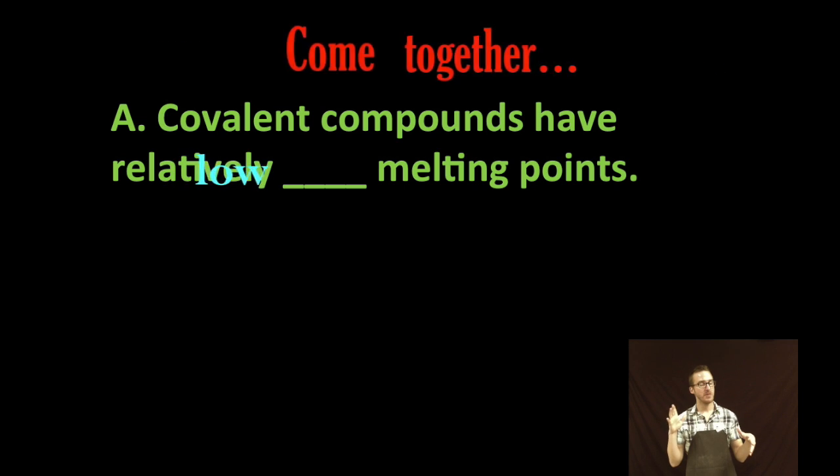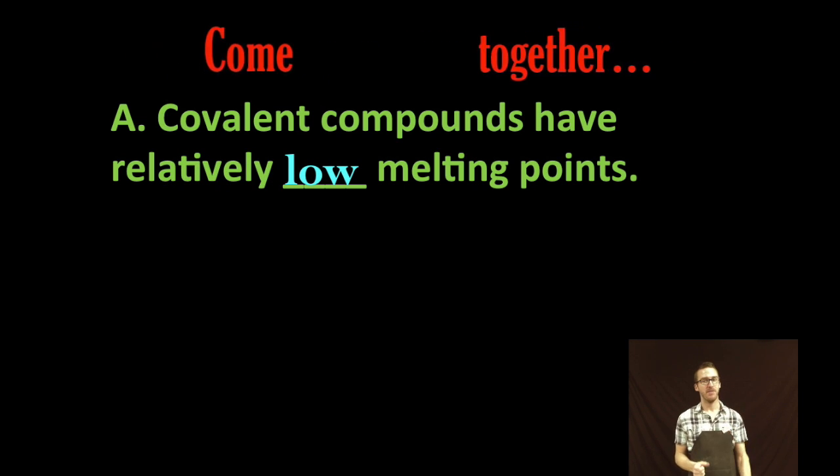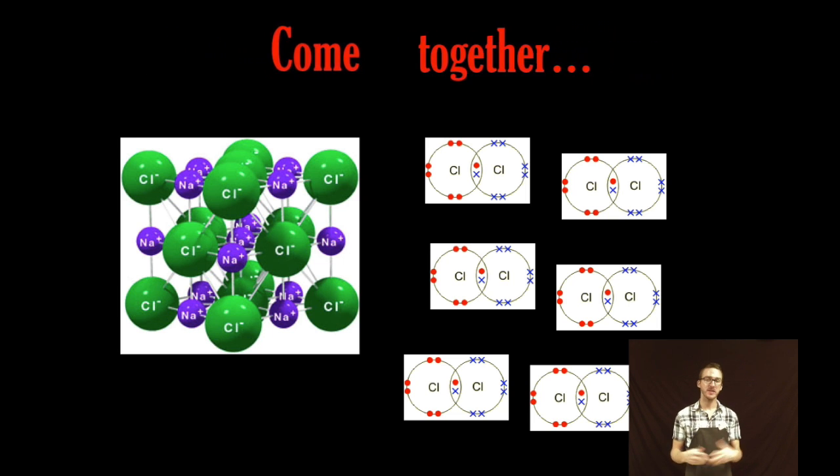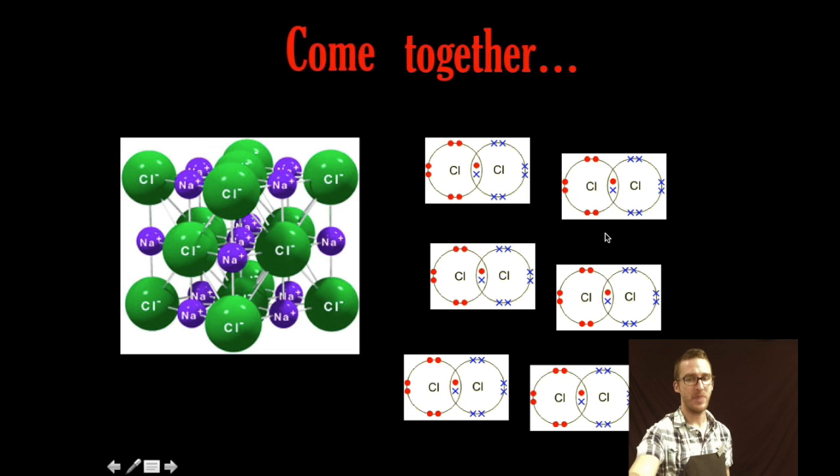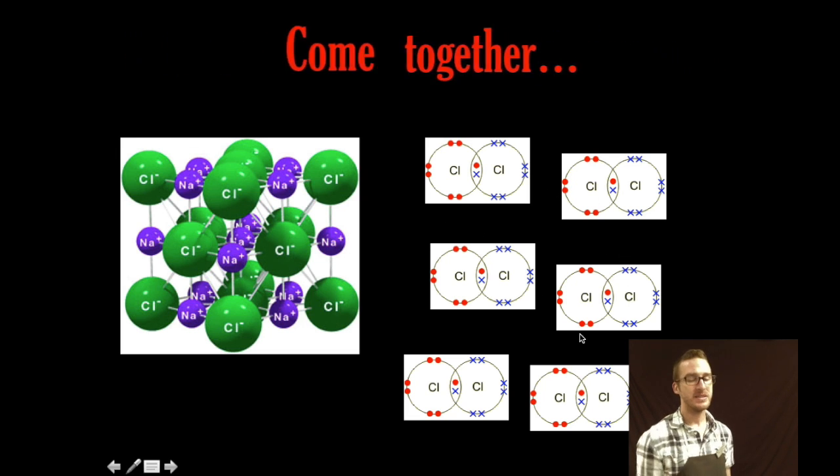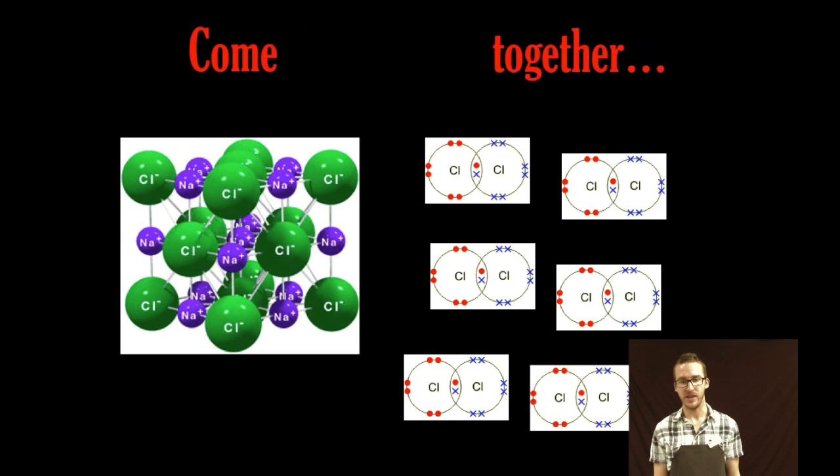All right, so let's talk about some quick properties of covalent compounds. They have generally, generally they have relatively low melting points. And again, as you think about the process of melting where a solid becomes a liquid, for your covalent compounds, because there aren't any bonds between your molecules, it takes relatively little energy to overcome the forces of attraction between molecules and go from the solid to the liquid phase.